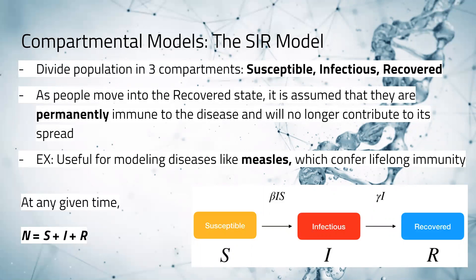The SIR model is useful for modeling diseases like measles, which confer lifelong immunity. At any given time, N equals S plus I plus R, where N is the size of the population, S is the number of people who are susceptible, I is the number of people who are infectious, and R is the number of people who have recovered.